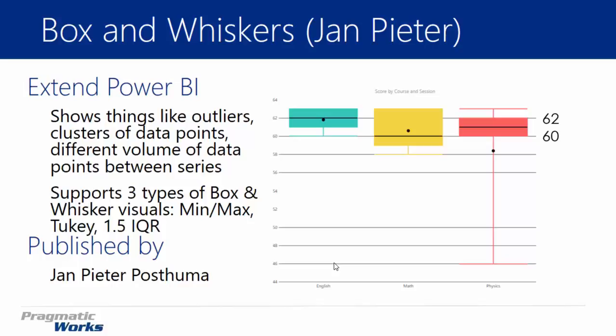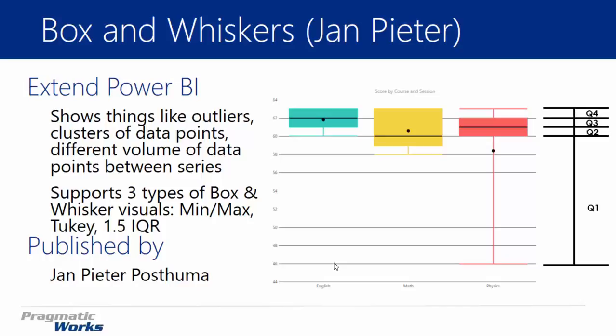The first quartile is from the very bottom part of the whisker all the way to the beginning of the bottom part of the box — that's Q1. Quartile 2 goes from the beginning of the box to the median. Quartile 3 goes from the median to the top half of the box, and quartile 4 goes from the top of the box to the top whisker. This really allows you to see a distribution of values and several different types of statistical variations in your data.